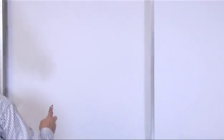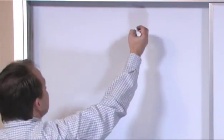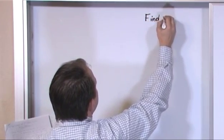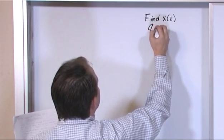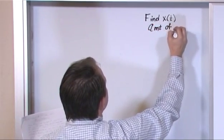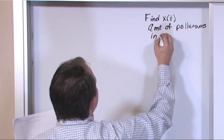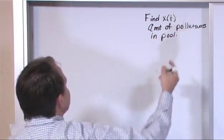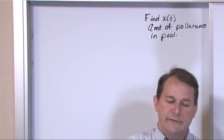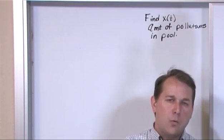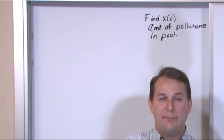So what we're trying to find is x(t), which is the amount of pollutants in the pool. And of course it's a function of time. It's going to change because the problem actually says that we start out with 100 grams of pollutants in the pool and we have water flowing in and inside of that water we have pollutants coming in at a rate of 2 grams per cubic meter.